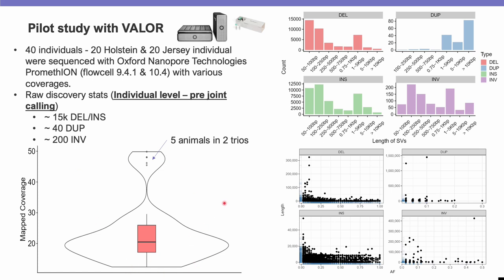One of the first things we did was count the number of structural variants in the cohort. We found that the majority of structural variants are insertions and deletions, with a smaller number of other types of variations, and the majority of them are less than 1 Kb in size.